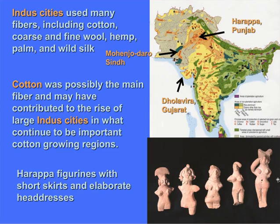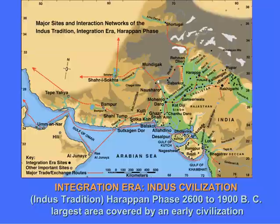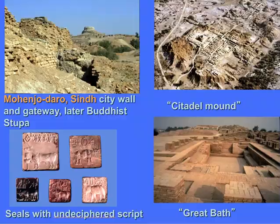During the Harappan period, we have figurines with lots of different styles of textiles — the short skirt is most common, but there are different headdresses all made with woven textiles. In the Indus cities, Harappa is one of the largest in the north in the Punjab; Mohenjo-Daro is located in Sindh; Dholavira is on an island in Kutch, controlling all the trade of Gujarat. Gujarat, Sindh, and the Punjab region are all important cotton-producing regions.